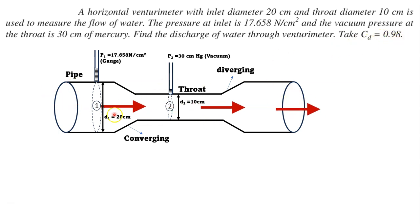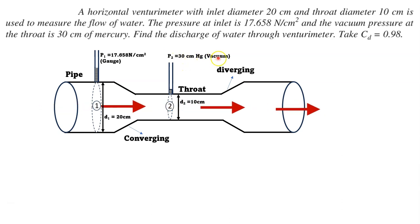Here is the Venturimeter diagram. This is the inlet, labeled 1, with diameter D1 equal to 20 cm, and gauge pressure P1 equal to 17.658 Newton per centimeter square. The throat diameter D2 is 10 cm, and the throat pressure is 30 cm mercury in vacuum. The converging section leads to the throat, followed by the diverging section.